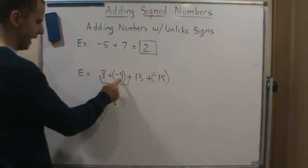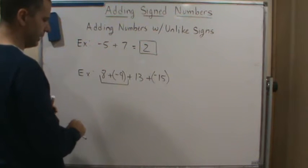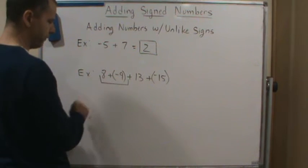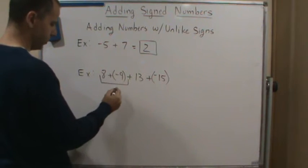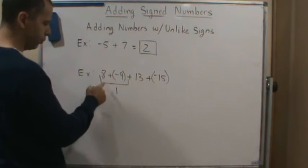So now, opposite signs. So that means I'm going to subtract the absolute values. So this is going to be 9 minus 8. So which is 1.